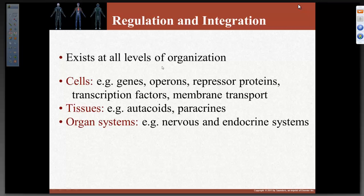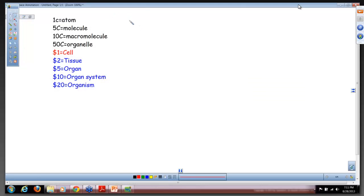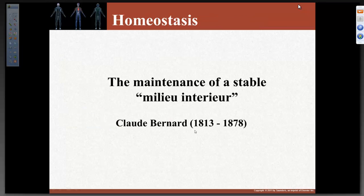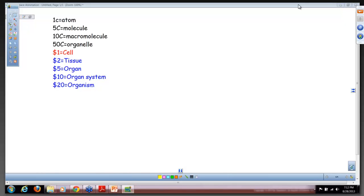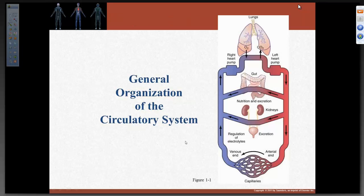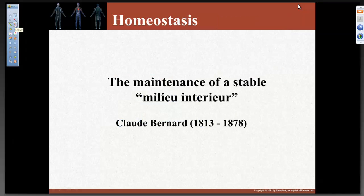What is homeostasis? You don't want to just memorize a definition — you need to be able to understand what you're talking about. Homeostasis is the maintenance of a stable internal milieu — to keep things stable. It was discovered by Claude Bernard in 1813 and 1878. How do we explain homeostasis in real life?